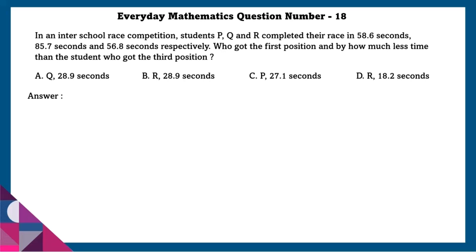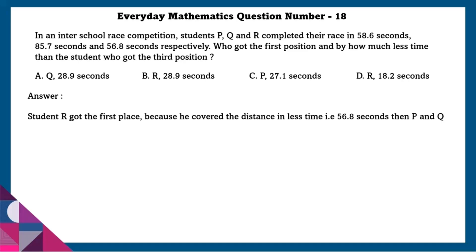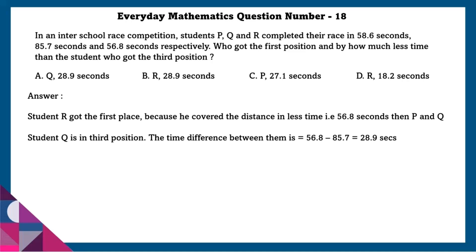Question 18: In a school race competition, students P, Q, and R completed their race in 58.6 seconds, 85.7 seconds, and 56.8 seconds respectively. Who got first position and by how much less time than the student who got third position? Student R got first place with 56.8 seconds. Student Q is in third position. The time difference is 85.7 minus 56.8, which equals 28.9 seconds.